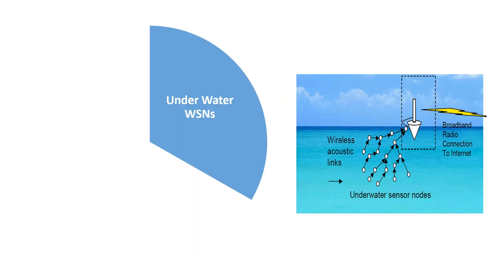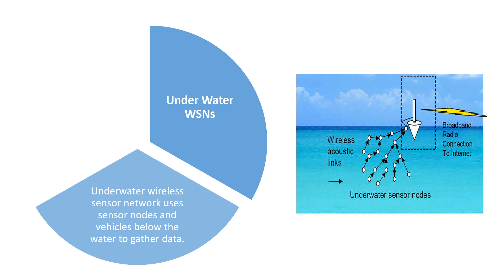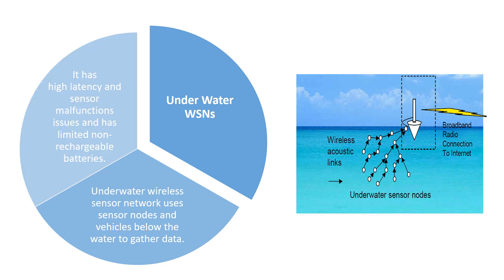The next type is the underwater WSNs. These underwater wireless sensor networks use sensor nodes and vehicles below the water to gather data, but they have high latency and sensor malfunctions — meaning the time for information to travel is high — and also have limited non-rechargeable batteries. In this diagram, we can see the sensor nodes underwater connecting to the sink node, which in turn connects to the base station that monitors and analyzes the data.